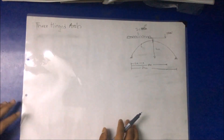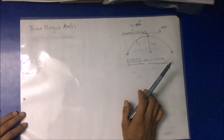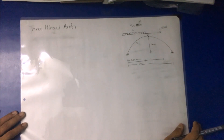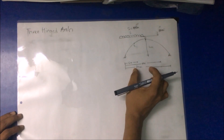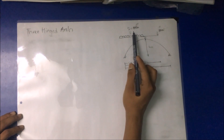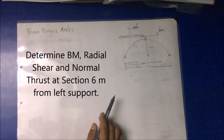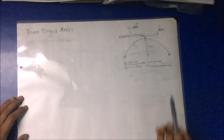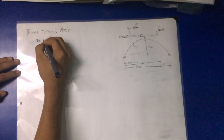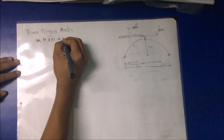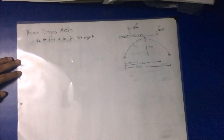Now let's go to a numerical. A three-hinged parabolic arch, hinged at the supports and crown, has a span of 24 meters and a central rise of 4 meters. It carries a concentrated load of 50 kN at 18 meters from the left support and a UDL of 30 kN/m over the left half. We need to determine the bending moment, normal thrust, and radial shear at 6 meters from the left support.